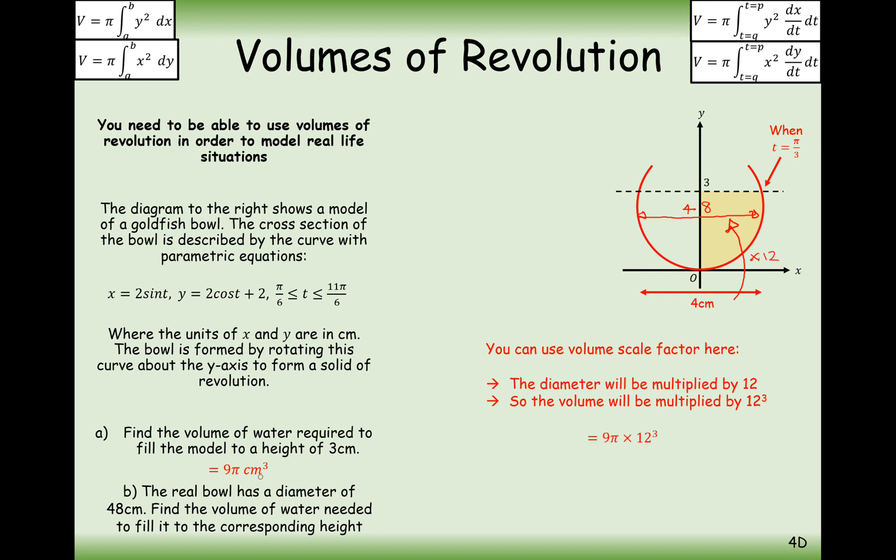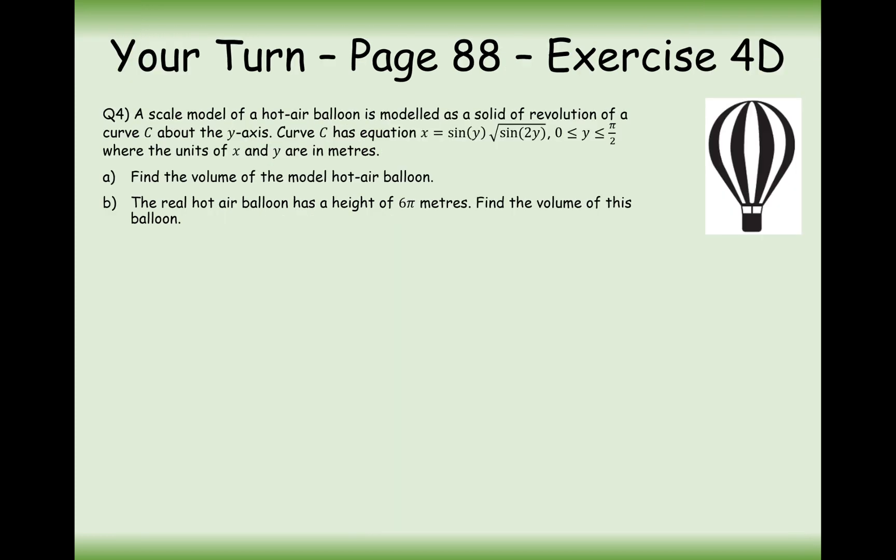In this case here, 9π was the answer previously, and we wanted to find the volume of water needed to fill to the corresponding height. That means still this kind of level here, not corresponding to where that diameter is, corresponding to part A. So it's going to be 9π times that scale factor enlargement of 12³. That's all we're going to go through in this demonstration question. Now it's your turn to have a go at question 4 from page 88. Pause the video and give this question a go.